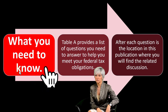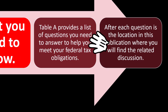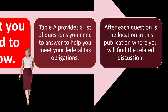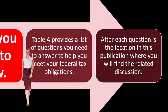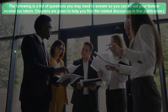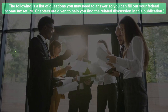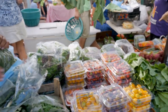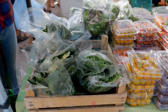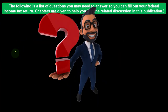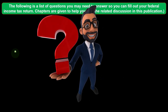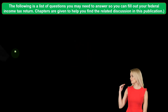So, what you need to know. Table A provides a list of questions you need to answer to help you meet your federal tax obligations; after each question is the location in the publication where you'll find the related discussion. These are concepts that often come up when people think about reporting their sole proprietor business. We will be touching on many of them, and you can go through the publication to jump to more information about any one of them to fill out your federal income tax return.